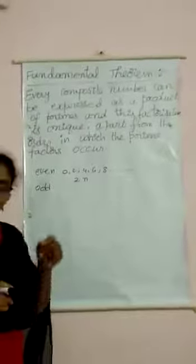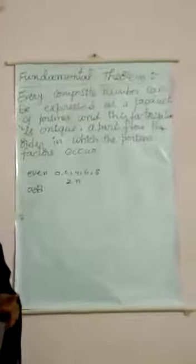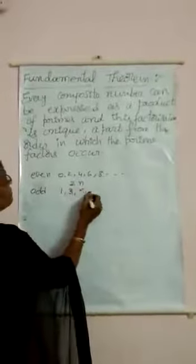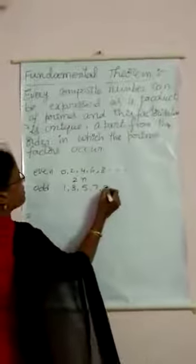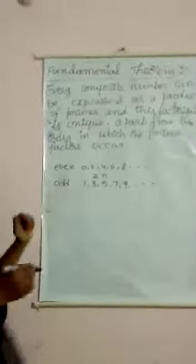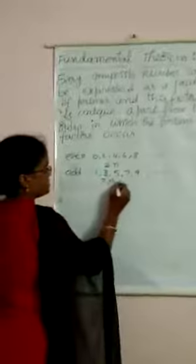Next are odd numbers. The numbers which are not even are called odd numbers. Those are 1, 3, 5, 7, 9, and so on. The general formula for an odd number is 2N + 1.